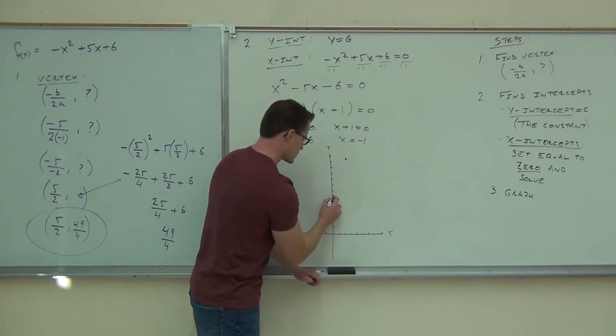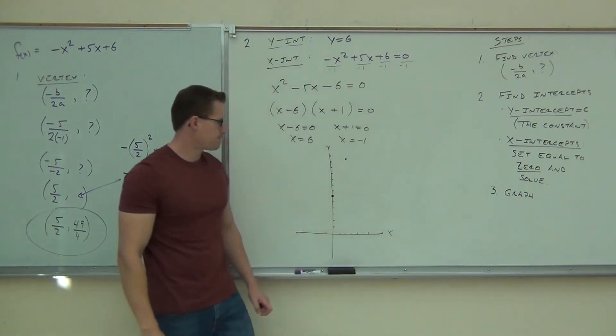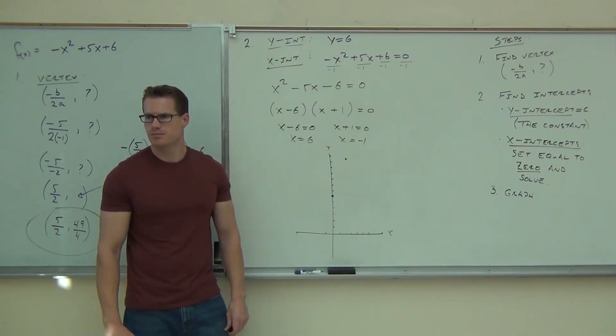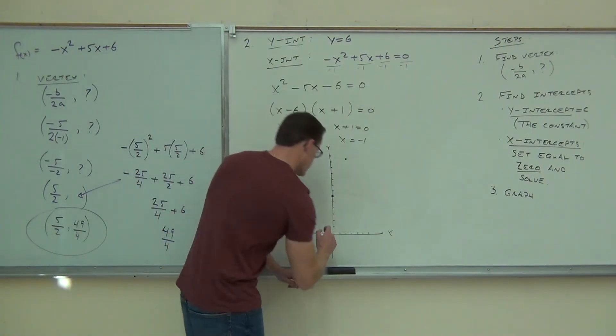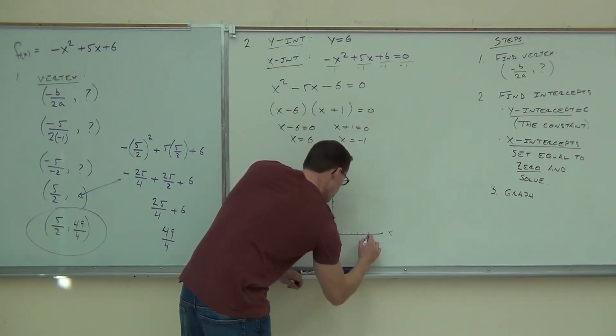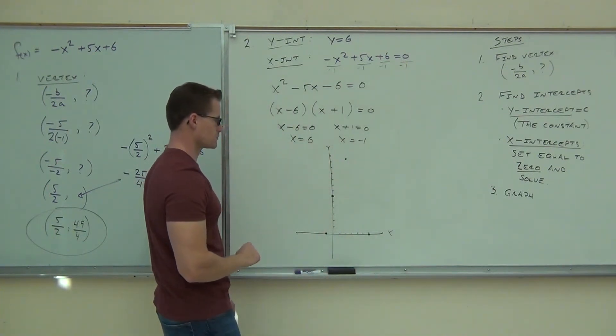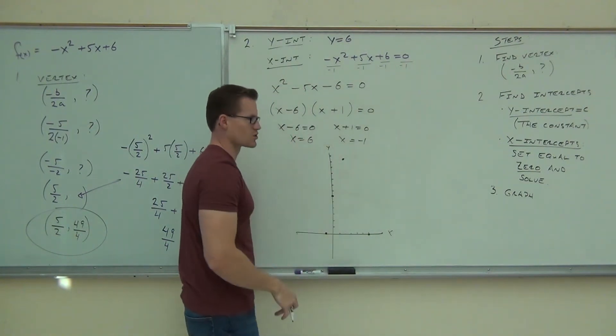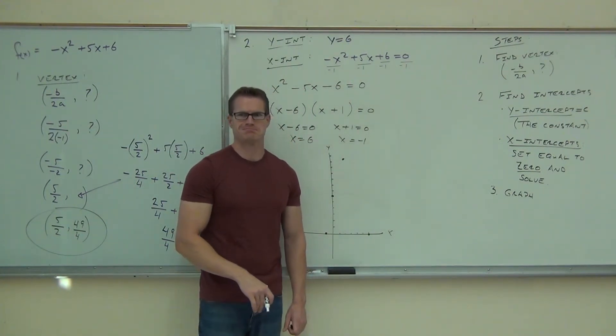One, two, three, four, five, six. Where's your x-intercept stat? Negative 1 and 6. Go ahead and plot them out. My y-axis is a little curved. You noticed? Oops.